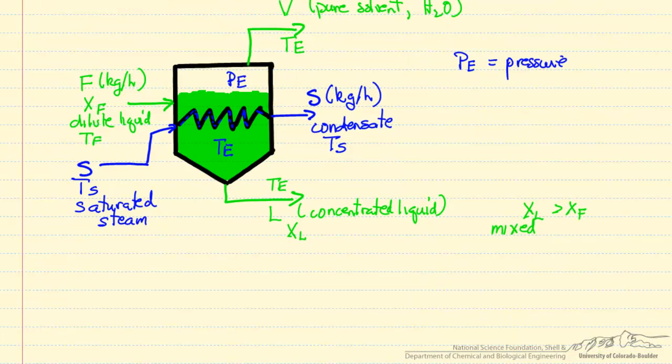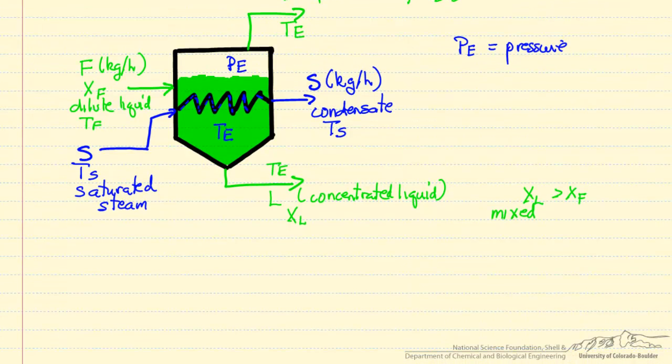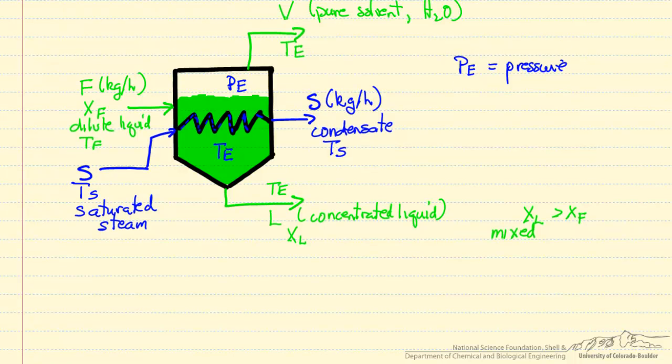So let's just look at some of the governing equations for this system. One would be a mass balance, and we'll do the mass balance on the overall feed, so this feed coming in is split into two streams, liquid plus vapor.